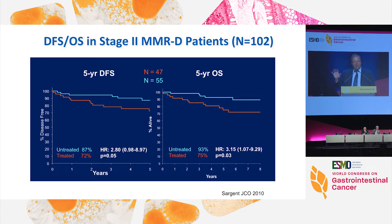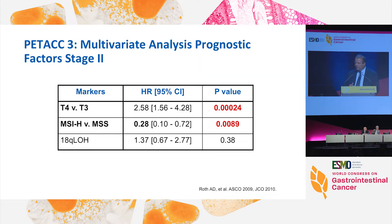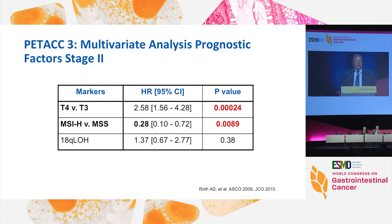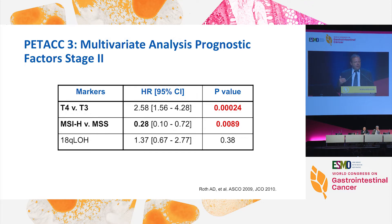There is clearly no need to treat patients with adjuvant therapy if they have an MMR-deficient, MSI-high stage two cancer — these patients do well anyway. Whether there is some resistance to fluoropyrimidine, which has been postulated from preclinical and clinical data, remains to be seen. This has been validated as a prognostic indicator in studies like PETAC-3, where in a multivariate analysis the two key factors were T stage (T4 versus T3) and MSI-high versus MSS.